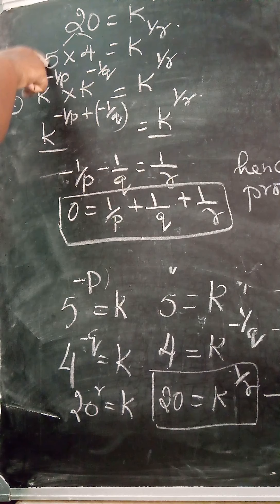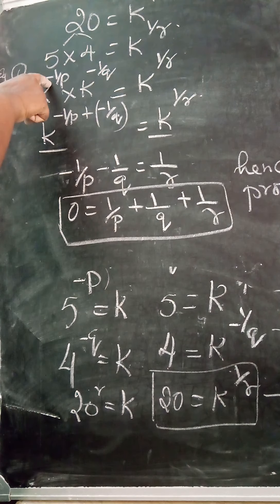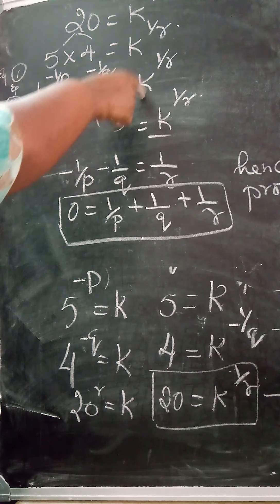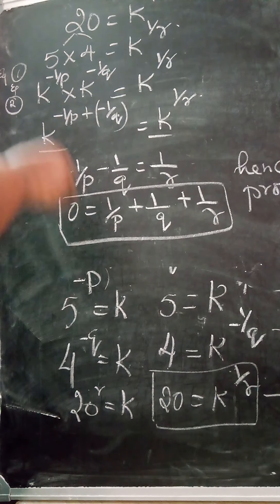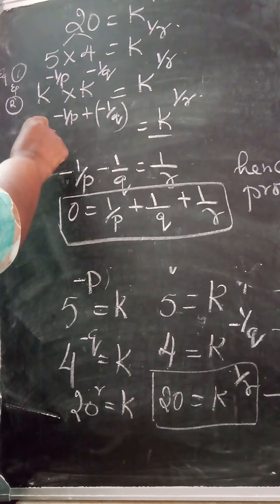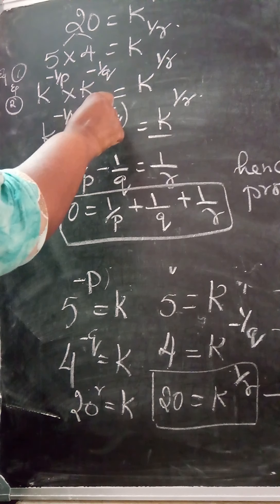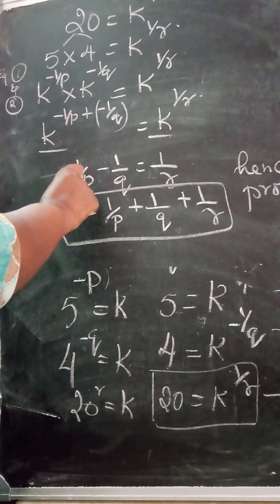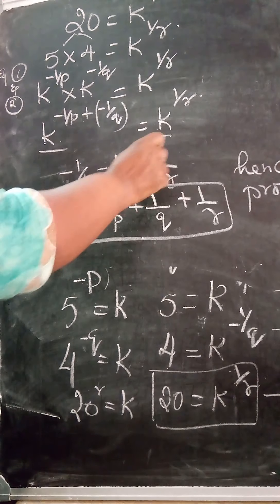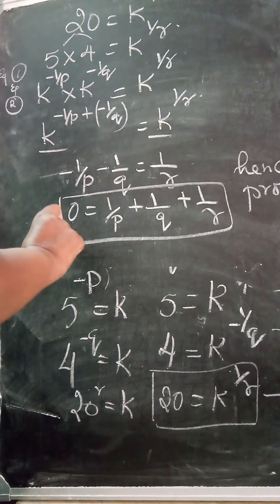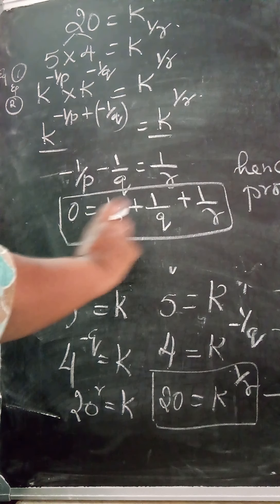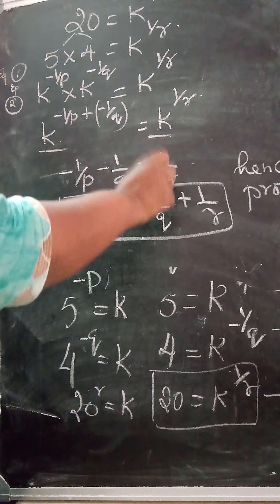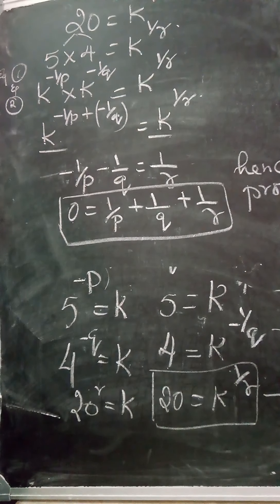So here I took 20 as 5 × 4, substituted 5 as k^(-1/p) and 4 as k^(-1/q), which equals k^(1/r). By the product law I added the powers: -1/p + (-1/q) = 1/r. Since the bases are same, I equated the powers. Then shifting -1/p and -1/q to the right gives 0 = 1/p + 1/q + 1/r. Hence proved.